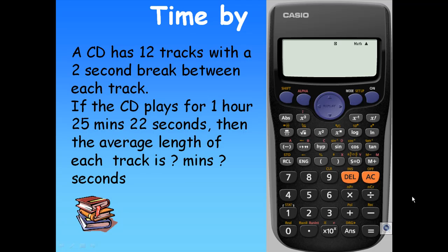My example will be like this: A CD has 12 tracks with a 2 second break between each track. If the CD plays for 1 hour, 25 minutes, 22 seconds, then what is the average length of its tracks in minutes and seconds?